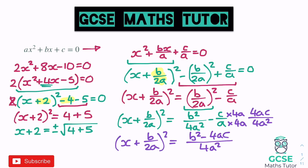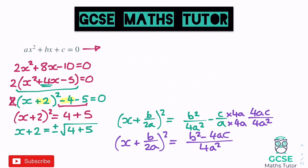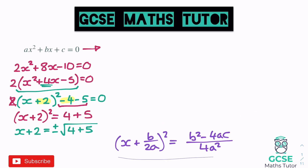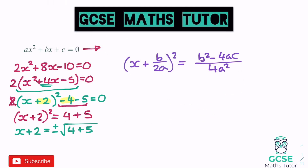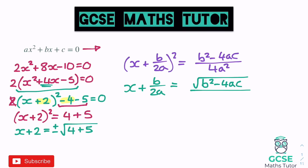Now we square root both sides. On the left, the squared bracket is removed, giving x + b/2a. On the right, I square root the top and the bottom separately: the top gives √(b² − 4ac), and the bottom — the square root of 4a² — is 2a, since 2a × 2a = 4a². Don't forget, when introducing a square root there's a positive and negative value, so we put ± in front. That gives ±√(b² − 4ac) all over 2a.